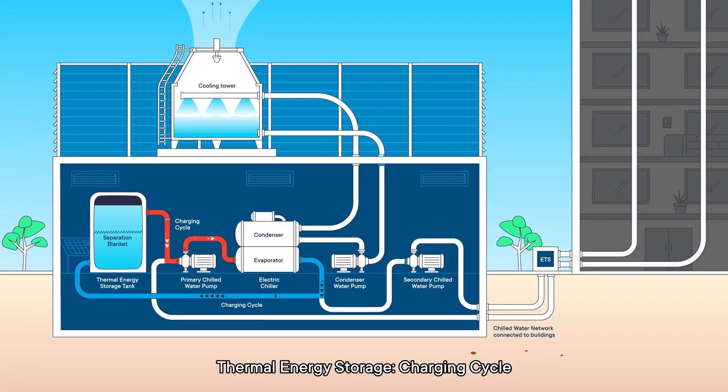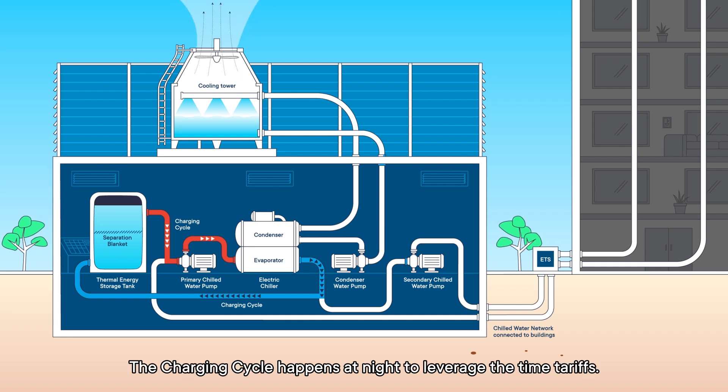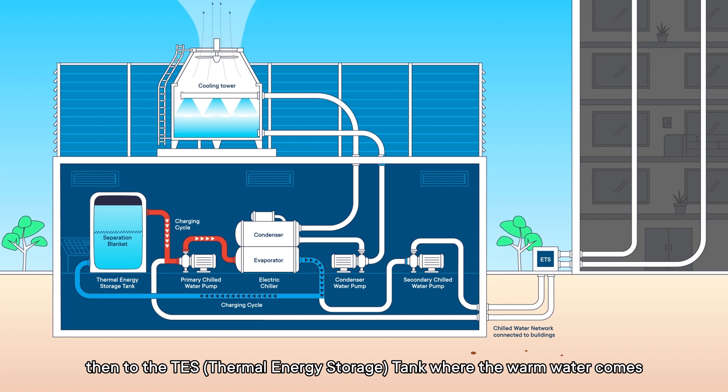Thermal energy storage charging cycle: The charging cycle happens at night to leverage the time tariffs. The TES tank is charged using the chillers, then to the TES tank where the warm water comes from the top and back into the chiller.